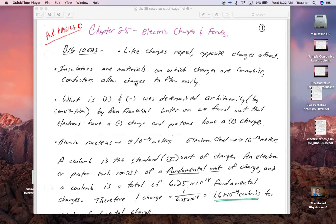Big ideas with electric charges and forces for Chapter 25: like charges repel, opposite charges attract. Insulators, things like plastic, dry wood, and rubber, are things where charges are immobile.